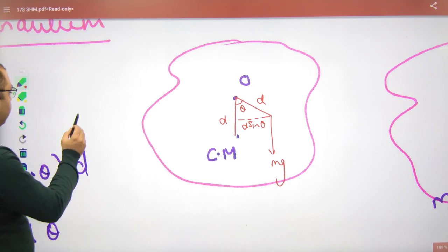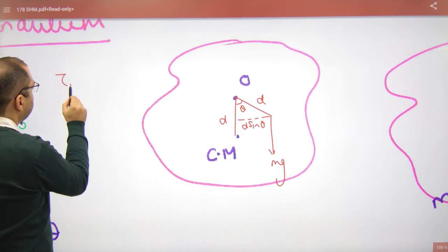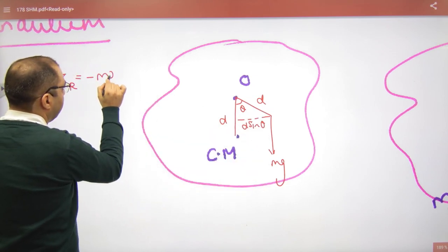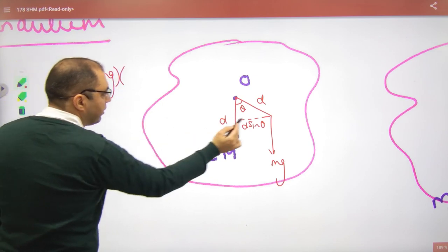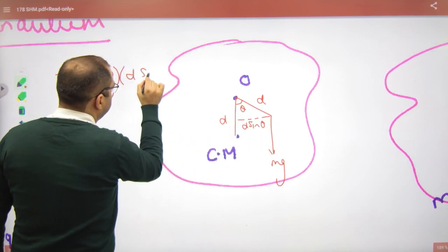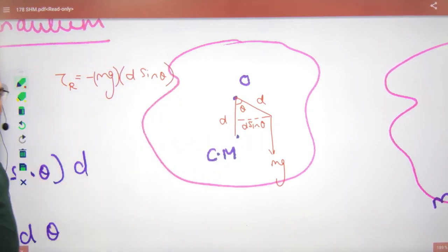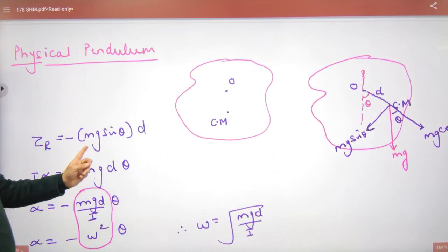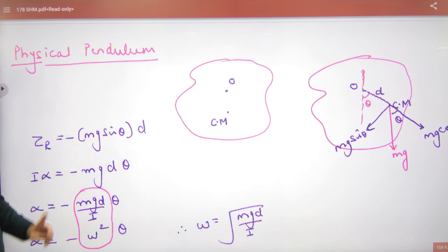So this will tell us, what will be restoring torque in it? Force mg into perpendicular distance - tell us how much? d sin theta. So what will be restoring torque? Minus mg into d sin theta. Put out this, then restoring torque has come. You can see, this is written: minus mg into d sin theta.